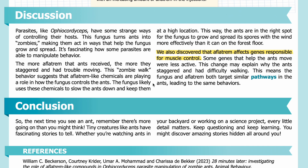The fungus likely uses these chemicals to slow the ants down and keep them at a high location. This way, the ants are in the right spot for the fungus to grow and spread its spores with the wind more effectively than it can on the forest floor. We also discovered that aflatrem affects genes responsible for muscle control — some genes that help the ants move were less active. This change may explain why the ants staggered and had difficulty walking, meaning the fungus and aflatrem both target similar pathways in the ants, leading to the same behaviors.